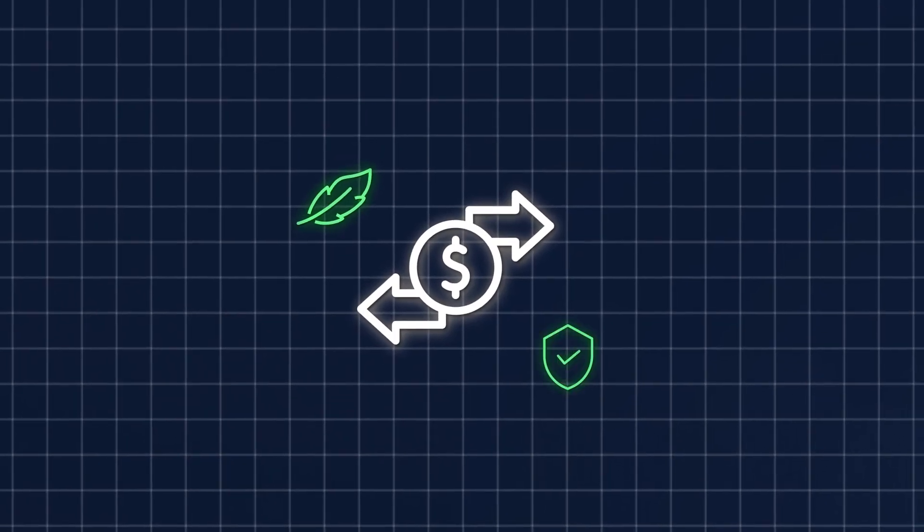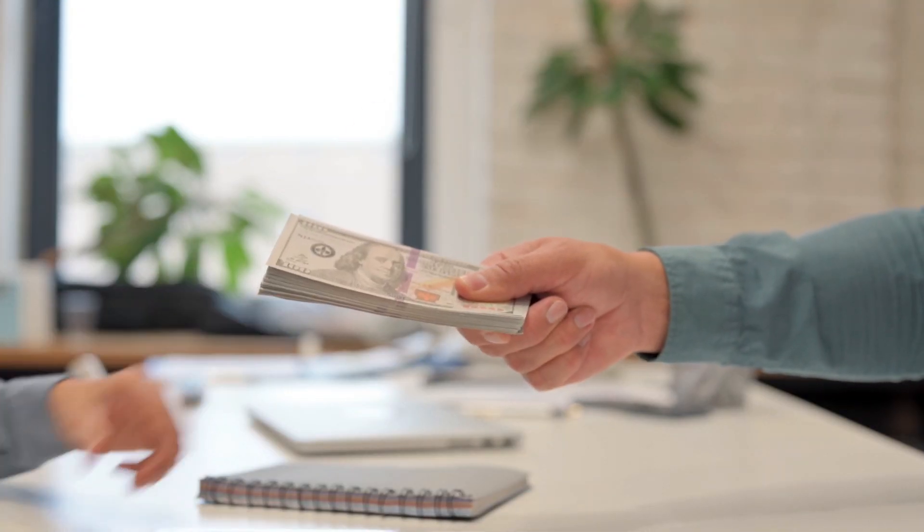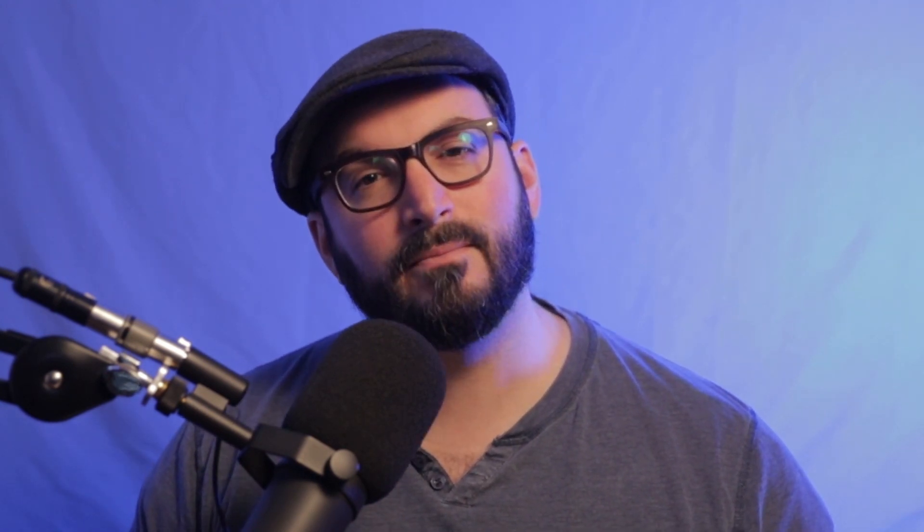But chargebacks aren't the only type of payment reversals. A payment reversal is when a transaction is overturned and the funds are removed from your merchant account and returned to the cardholder's bank account. This can be instigated by the cardholder, bank, or merchant in three main ways: one, authorization reversal; two, a refund; and three, a chargeback.